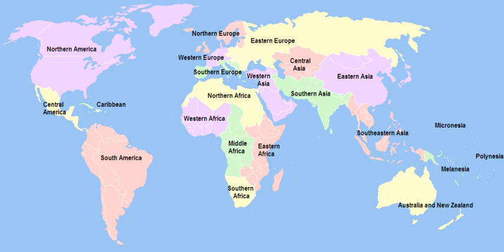The United Nations Geoscheme is a system which divides the countries of the world into regional and subregional groups. It was devised by the United Nations Statistics Division based on the M49 coding classification.